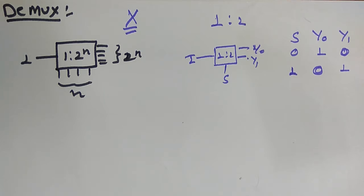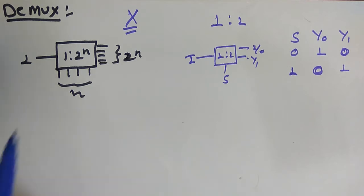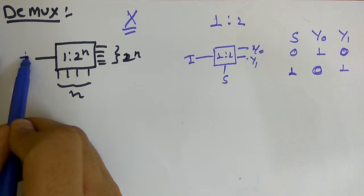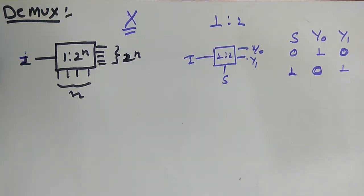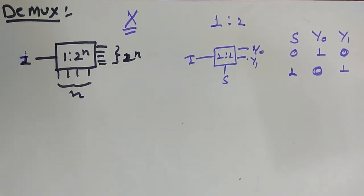DEMUX is nothing but the complement of multiplexer. The output is only one in MUX, but here in DEMUX the input is one and the output is 2 to the power n. So we can say that the demultiplexer is a combinational circuit which contains a single input and multiple outputs.